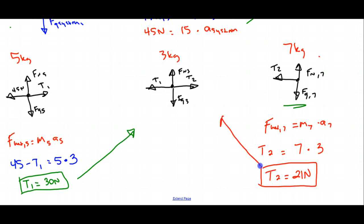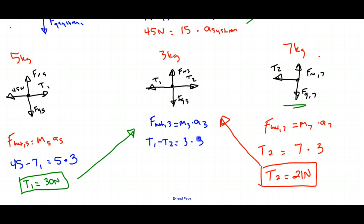Let's verify: a 30 newton force to the left and a 21 newton force to the right should give the 3 kilogram object an acceleration of 3 meters per second squared. Writing it out: T1 minus T2 equals mass of 3 times acceleration of 3, so 30 minus 21 equals 3 times 3. Indeed, 30 minus 21 is 9, and 9 equals 9. Confirmed.